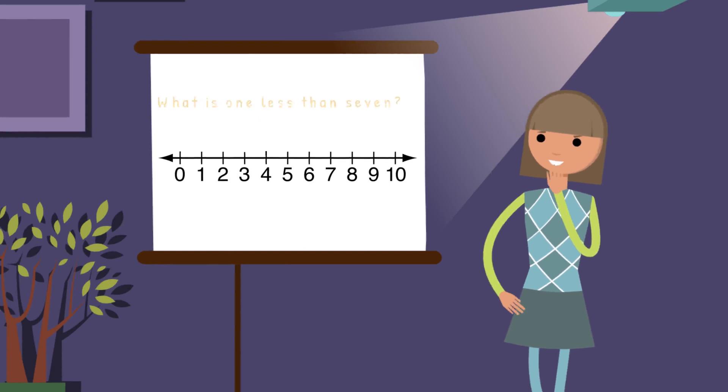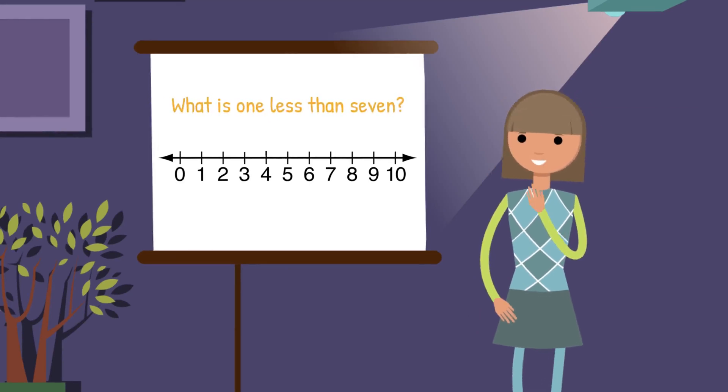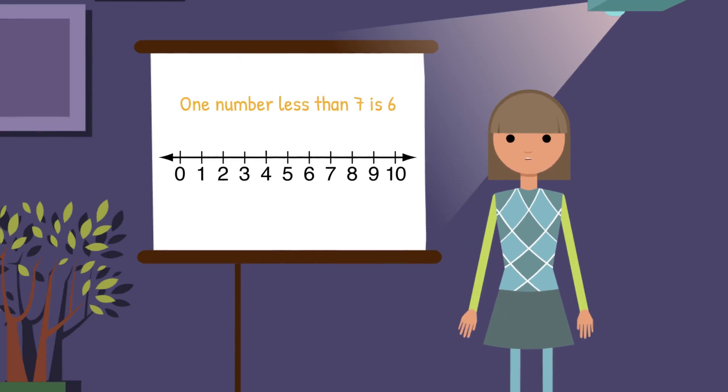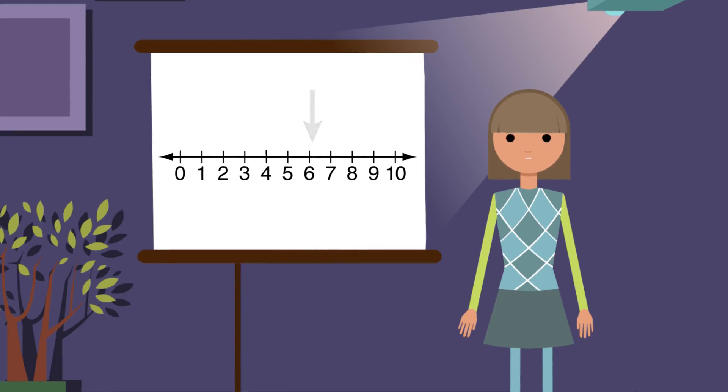What is 1 less than 7? You are so smart! One number less than 7 is 6. Since it is one place behind the 7 on the number line, 6 is 1 less. We can say 6 is smaller than 7 by 1.